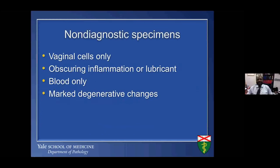The non-diagnostic specimens—sometimes what you get back is non-diagnostic. Why? A lot of times it's because all we see is vaginal contamination with no obvious urothelial cells. We call it non-diagnostic when there's obscuring inflammation, obscuring lubricant, or when we cannot evaluate the urothelial cells. When we see blood only, it's supposed to be non-diagnostic, but we've been a little flexible. When the requisition says the patient has hematuria and all we see is blood, a lot of times we let that go and call it negative, reporting red blood cells only. Also, when there are marked degenerative changes, we call that non-diagnostic if we cannot evaluate the cells.